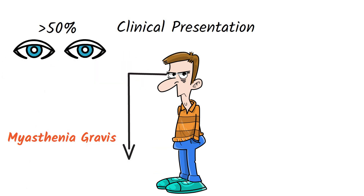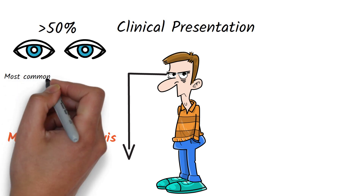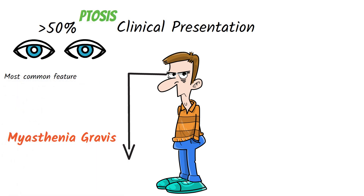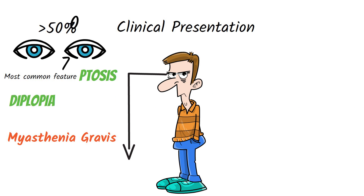The most common feature is ptosis, which means drooping of eyelids. Diplopia occurs in around 70% of patients — diplopia refers to double vision.